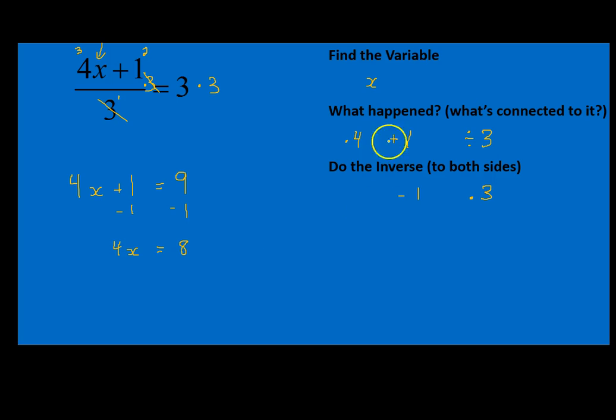Now we've worked our way in so that we have only one operation left, multiplying times 4. To get rid of that, we'll divide both sides by 4. And our final answer is that x is equal to 2. That's going to be the final answer for this equation, x is equal to 2.